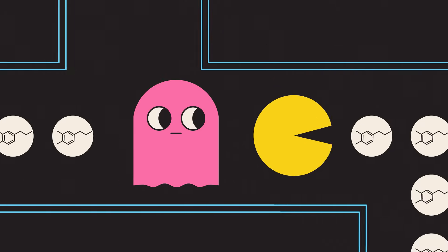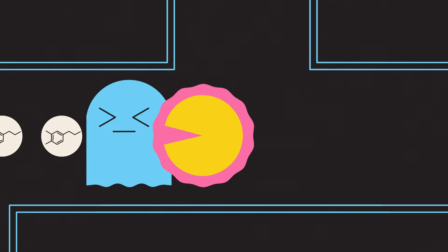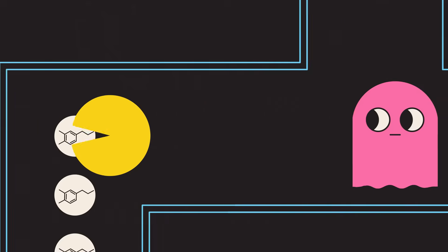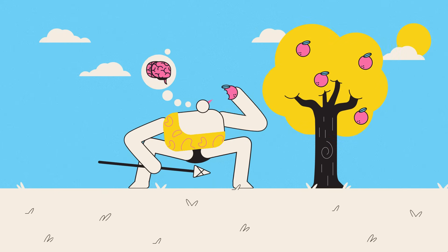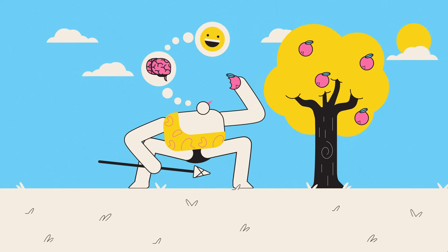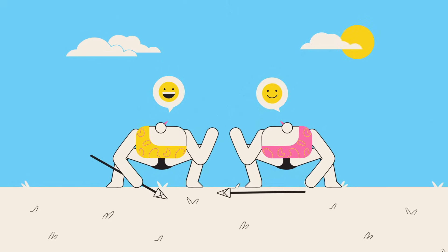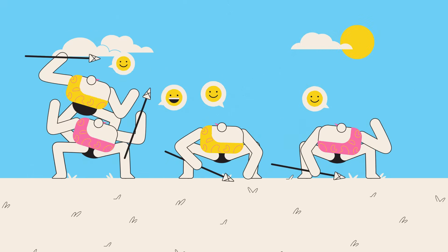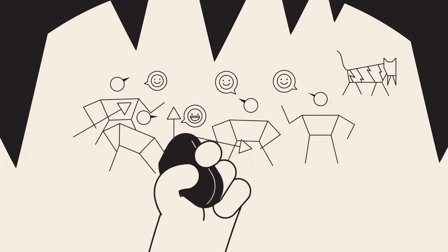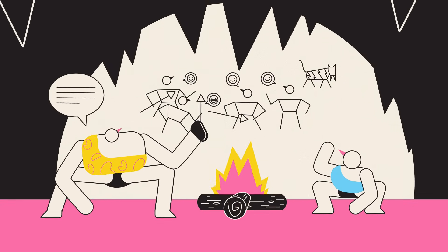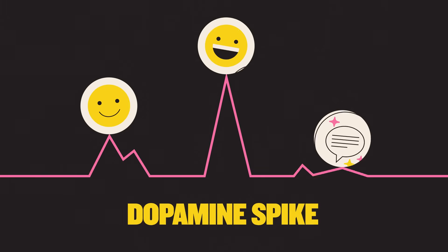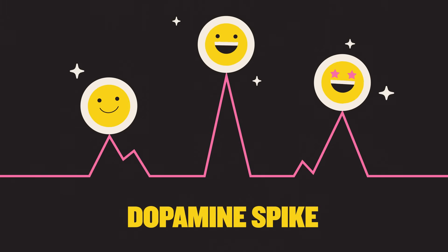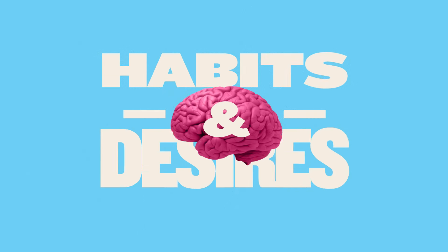We've evolved to receive hits of dopamine for things that will help ensure our survival, making us want to repeat whatever action triggered its release. Found some high energy food? Great, starvation averted. Come back for more tomorrow. Made a friend? Fantastic. There's safety in numbers. Do it again. Heard a captivating story? Awesome. You've learned something about how the world works. Keep listening. Each of these experiences causes a dopamine spike, building positive associations and shaping our habits and desires.